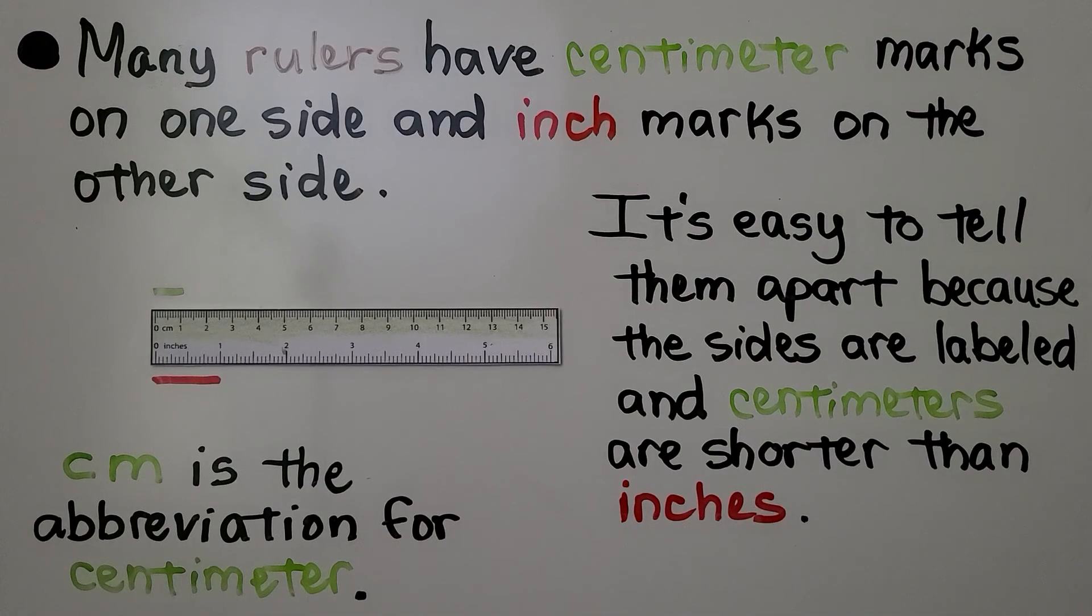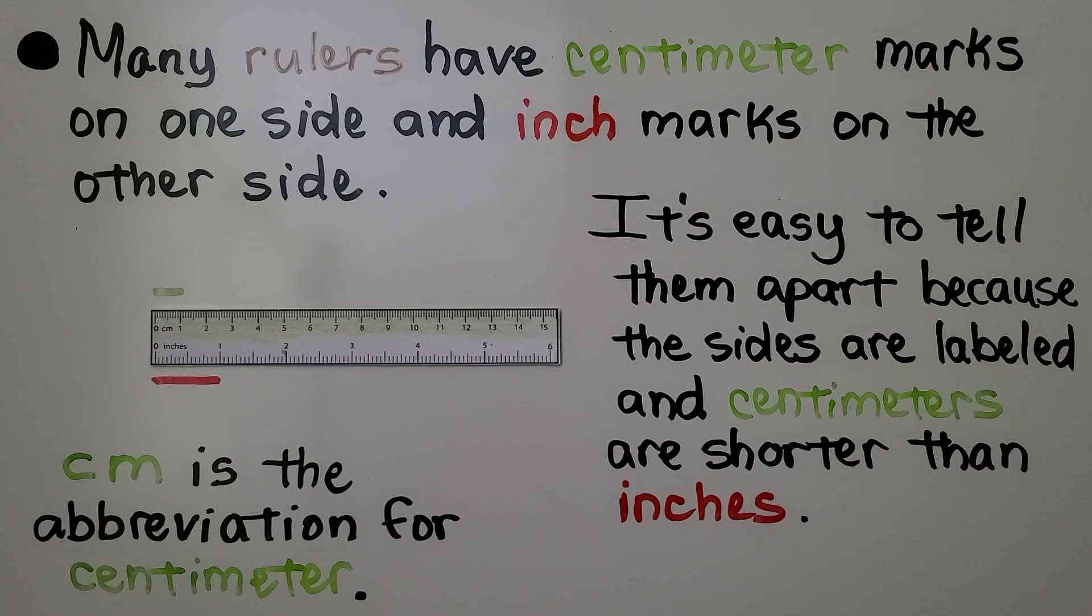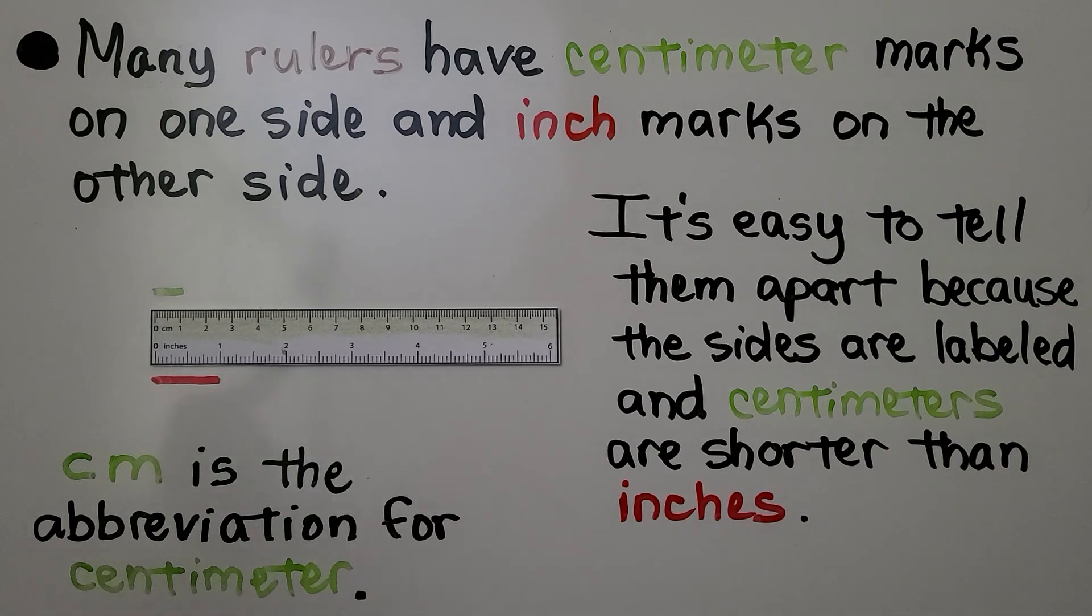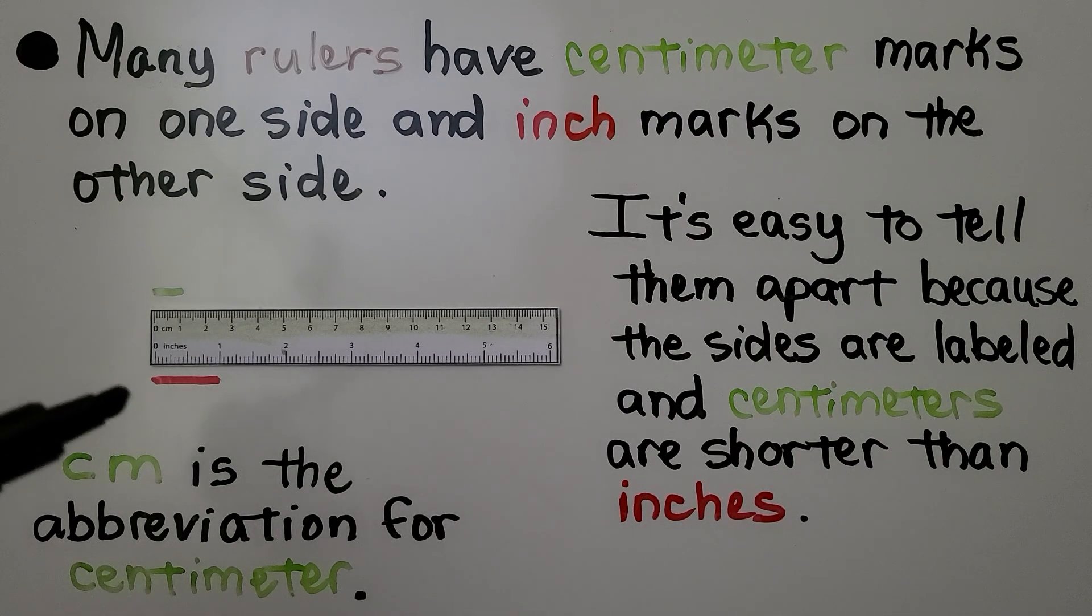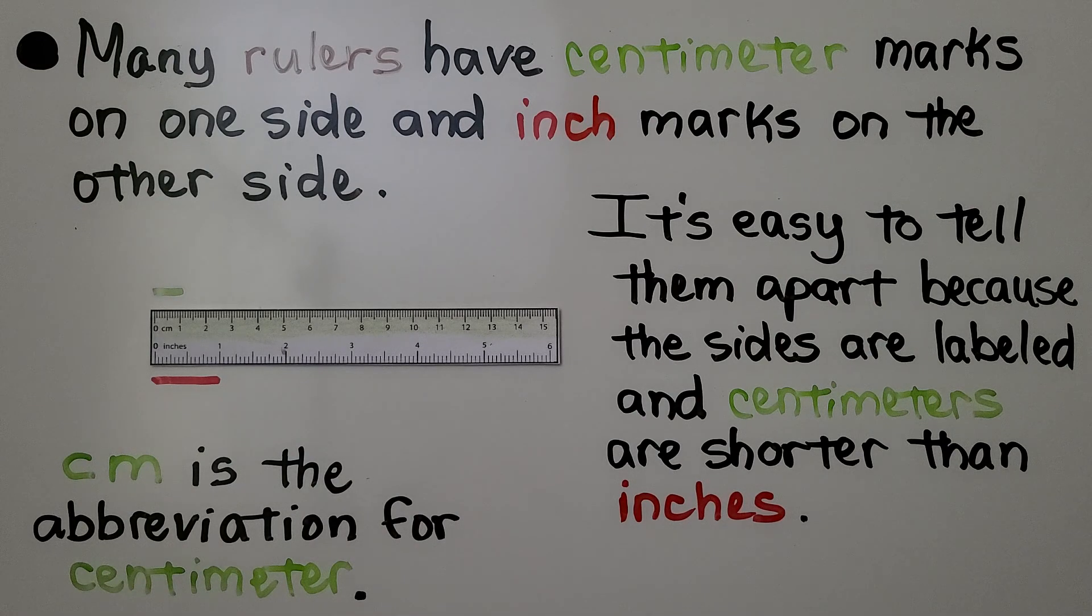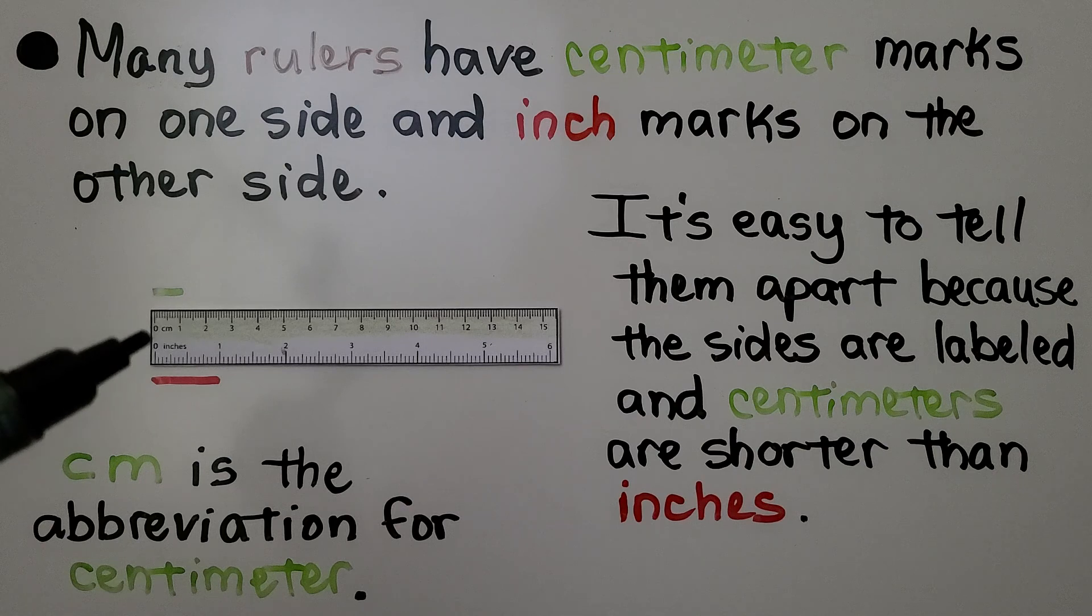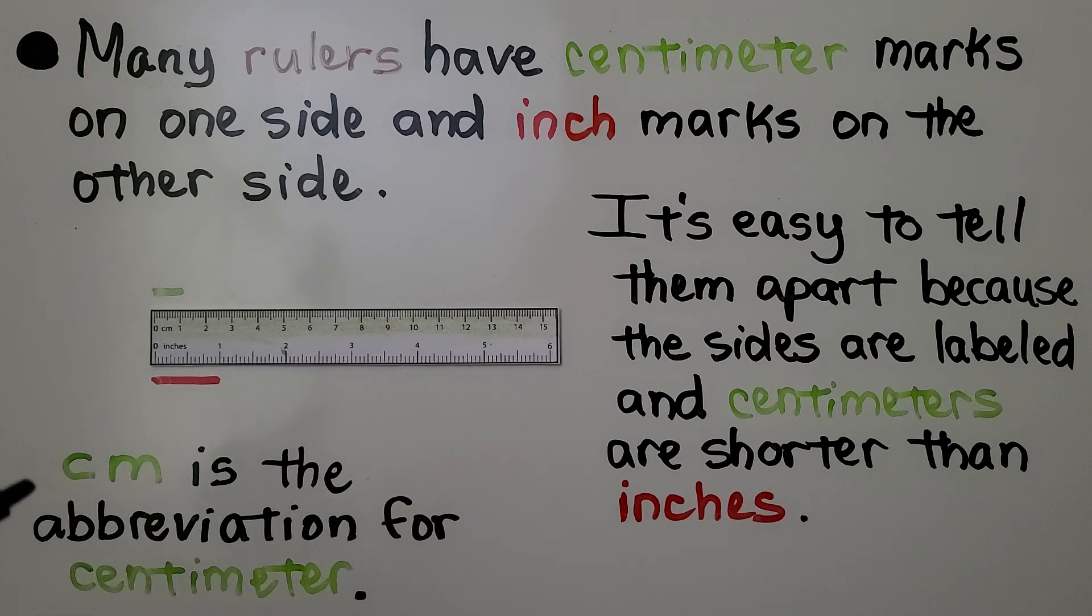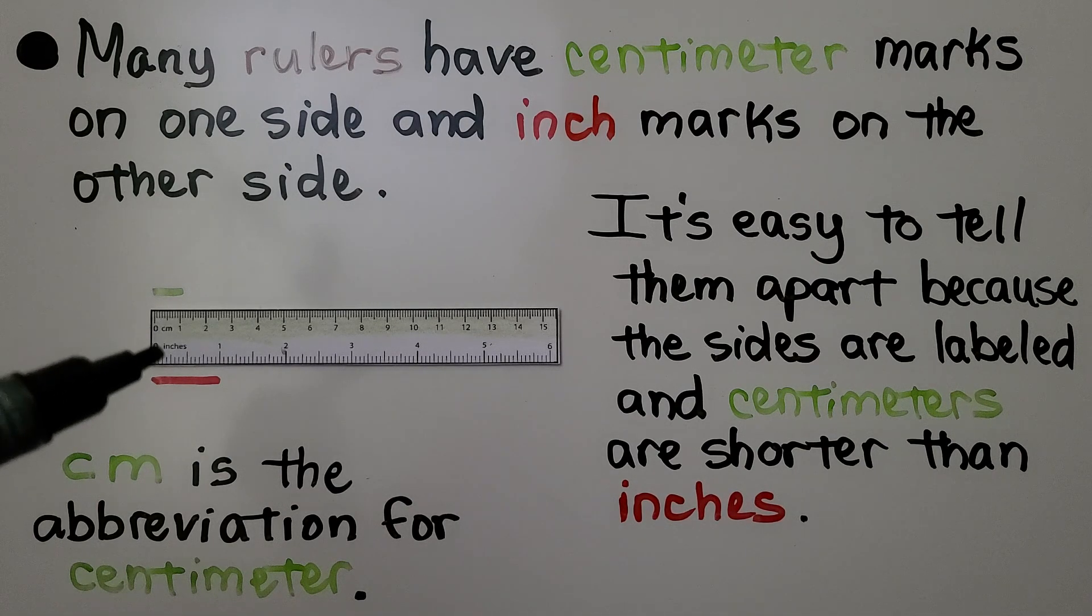Many rulers have centimeter marks on one side and inch marks on the other side, and it's easy to tell them apart because the sides are labeled. It says cm, that's the abbreviation for centimeter, and this says inches.